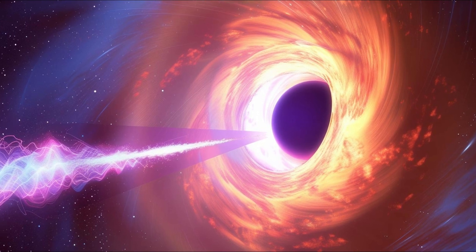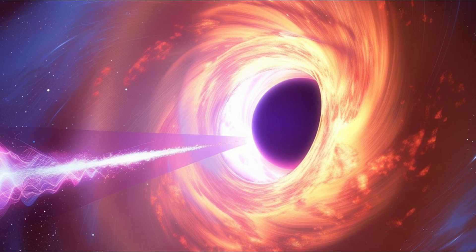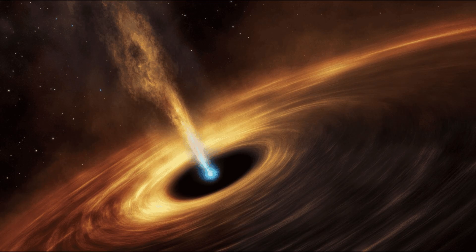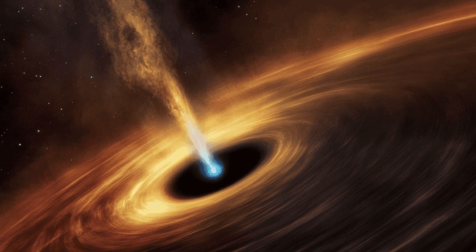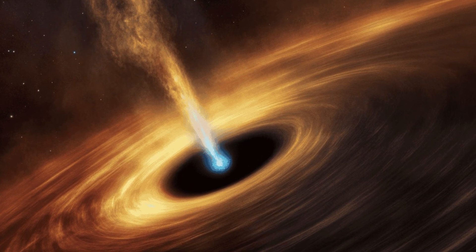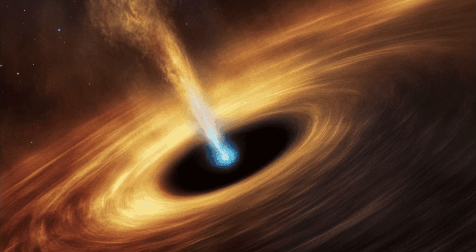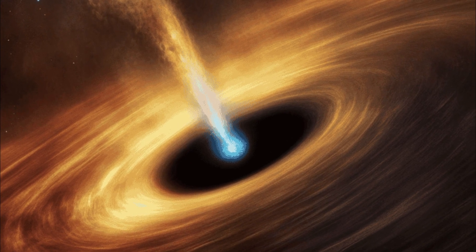This process allows Chandra to detect the jet despite its immense distance. Researchers identified two supermassive black holes with jets stretching over 300,000 light-years. The first lies 11.6 billion light-years from Earth, with particles moving at 95 to 99 percent the speed of light.